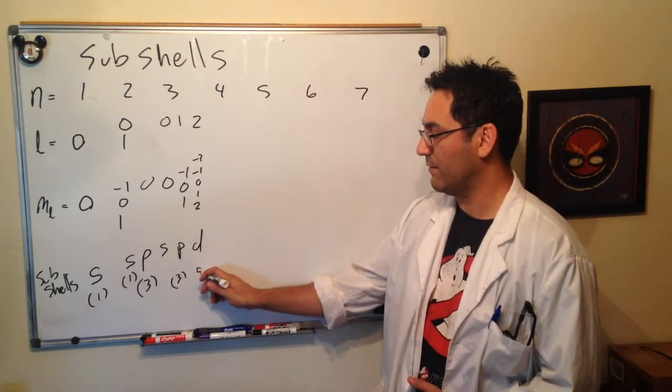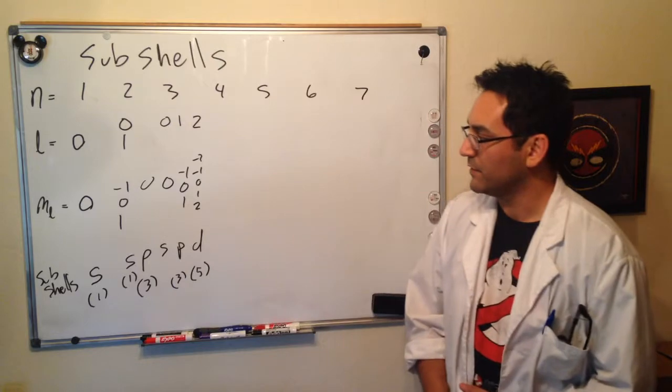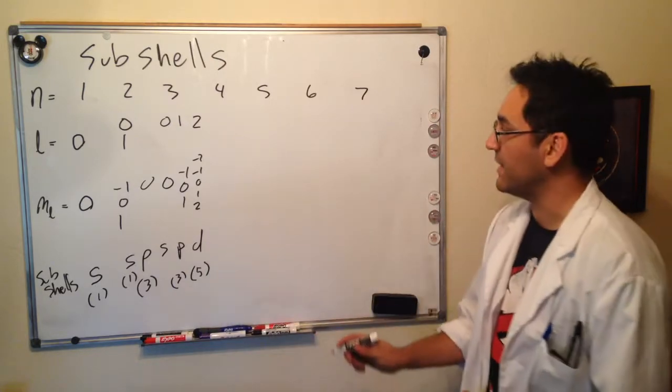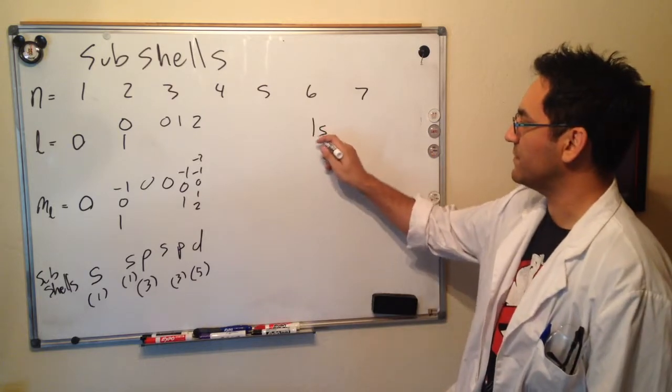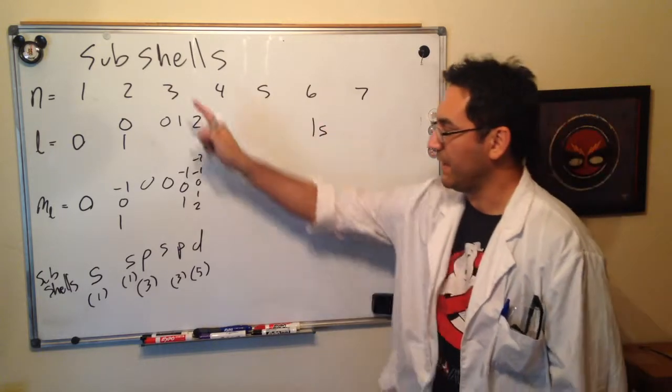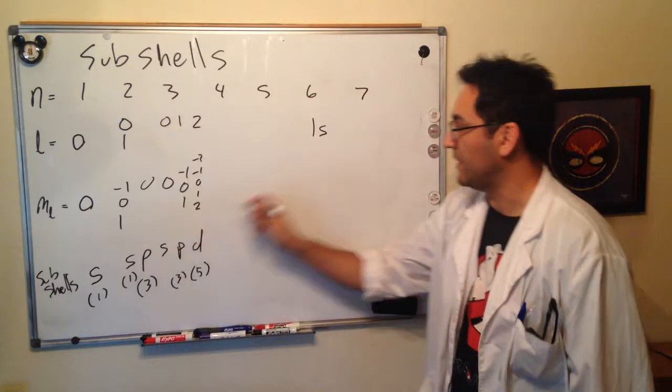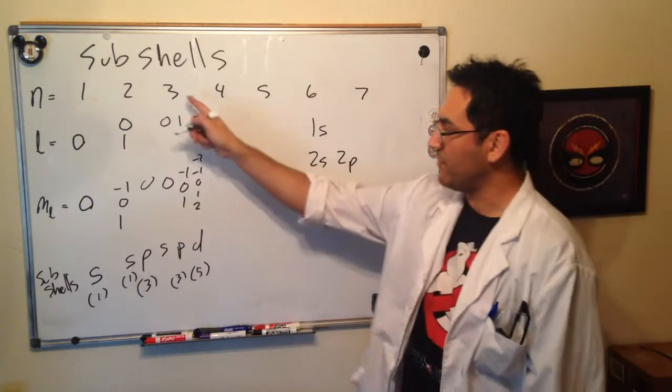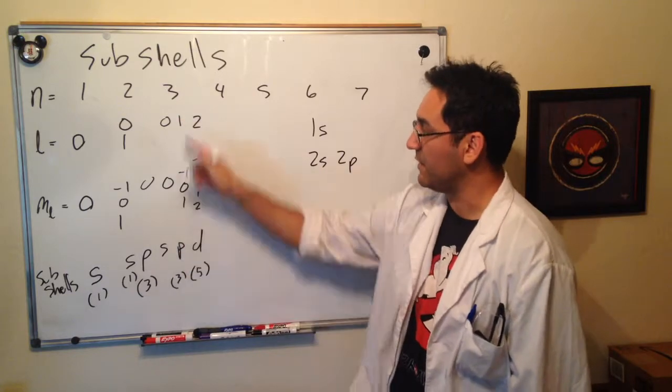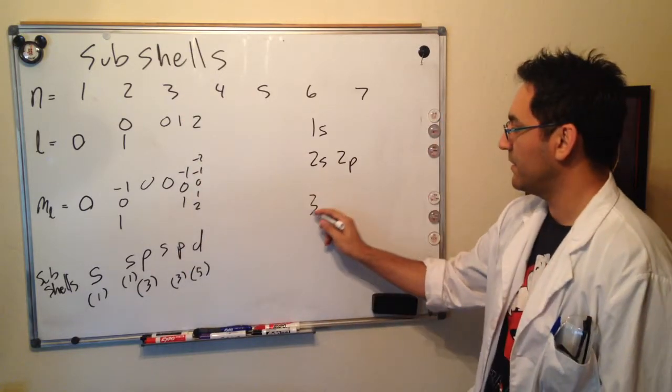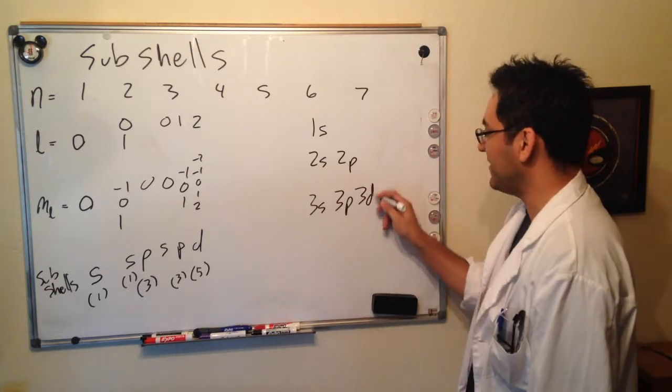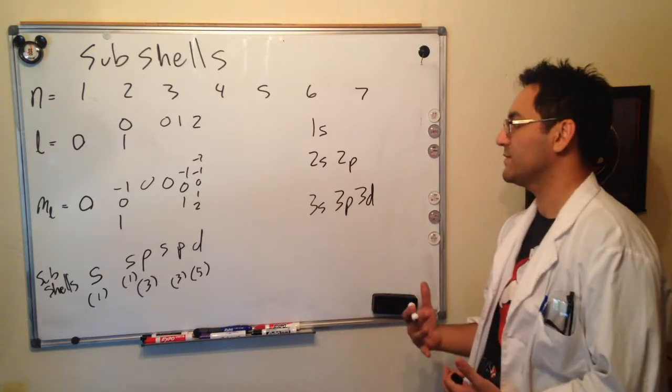And there are five of them. So this is already telling us, just to summarize right now, we have a 1s. We have a 2s and a 2p. We have a 3s, a 3p, and a 3d. So this is the subshells. These are the subshells.